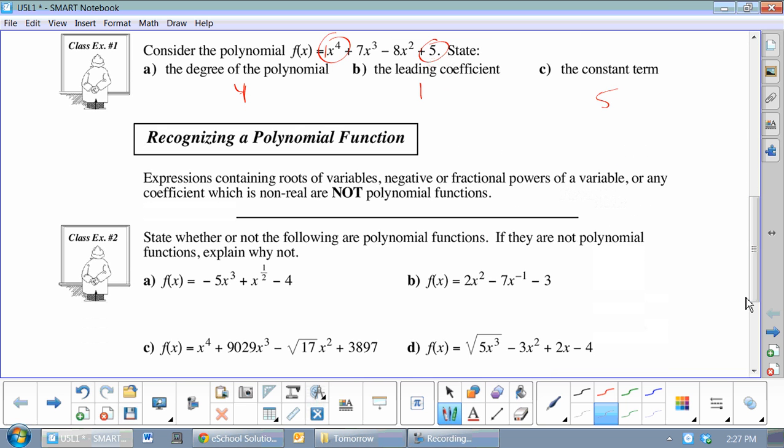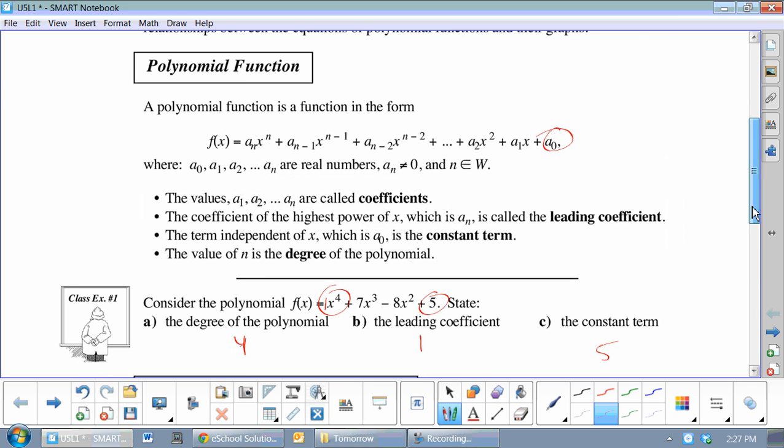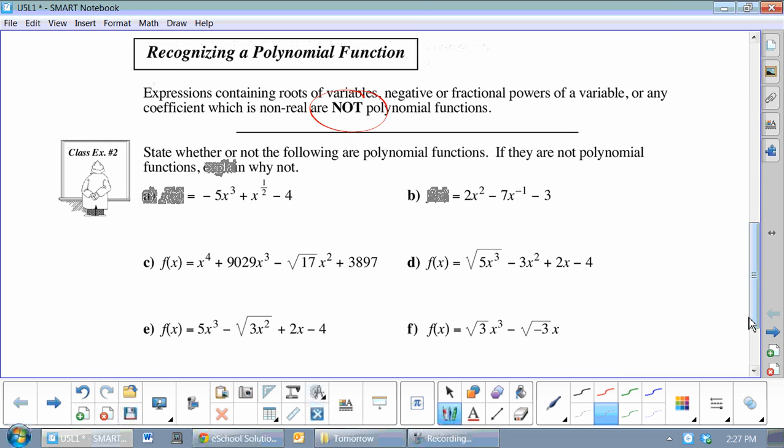Now we're talking about which are not polynomials. We've got to look above. We have to have those reals, all those rules, to be polynomial. A would be a no. Why? Because of this. You cannot have an exponent that is not a natural number. B is a no as well because it fails there. C is good. D is not good because this means 5x to the 3 over 2, and that is not allowed.